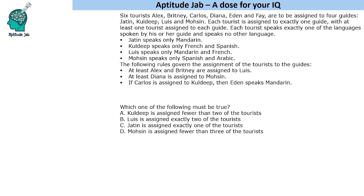Hello everyone, welcome to Aptitude Jab. This is a set based on selection. It says that there are six tourists — you can call them A to F. They are assigned four guides: J, K, L, M.